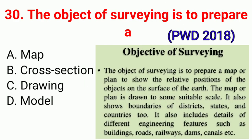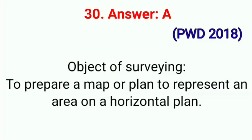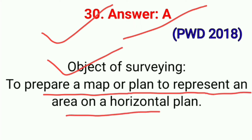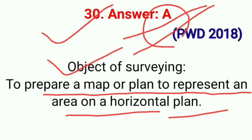Question No. 30. The object of surveying is to prepare a — correct option A: Map. The object of surveying is to prepare a map or plan to represent an area on a horizontal plane. Correct option A.